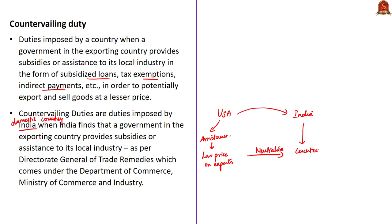For example, consider USA as the exporting country — goods from USA are exported to India. When the US provides such assistance, foreign suppliers and manufacturers in the USA would be able to potentially export and sell goods at a price lower than what Indian companies can manufacture and reasonably sell in India. To neutralize the adverse effects of subsidies allowed for a product in the exporting country, countervailing duties are imposed by the domestic country — India in this case. Any country can impose countervailing duties on imports if it feels affected by the exporting country's actions.